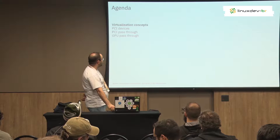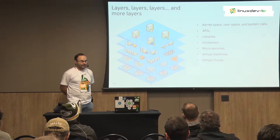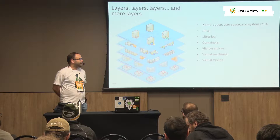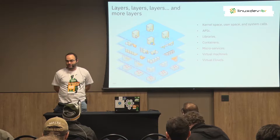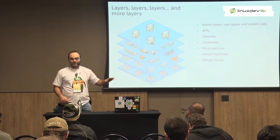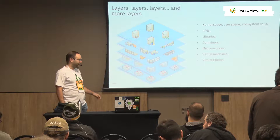So, layers. In computer science and engineering in general, we love layers. We create layers and abstractions to isolate, to make things more secure, to abstract details. We don't want to see what the other parts of the system are doing. We don't want to be interfered by them.